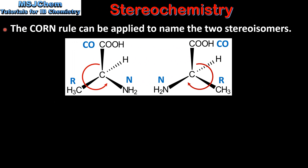The CORN rule can be applied to name the two stereoisomers. When using the CORN rule, the molecule is viewed with the hydrogen atom facing away from the viewer. If we give the carboxyl group the letter CO, the side chain the letter R, and the amino group the letter N, we can see it spells CORN.